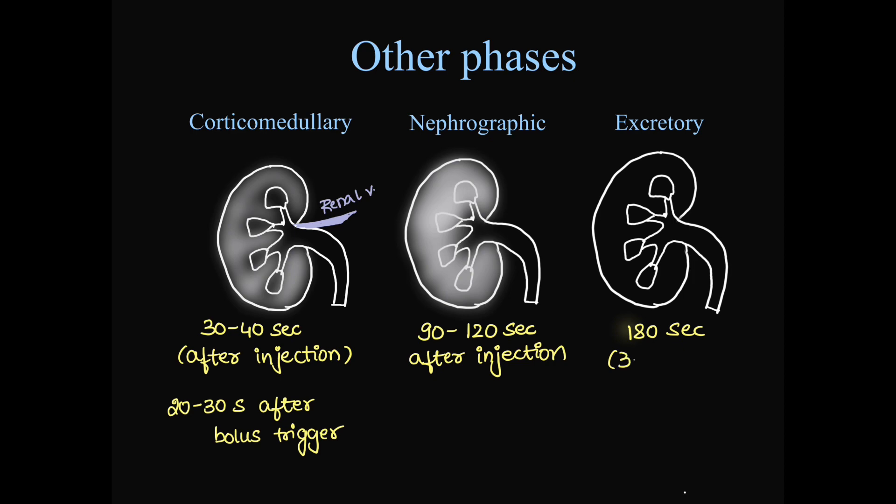Next, we have excretory phase. Taken at 180 seconds or 3 to 5 minutes after injection. In this, the dye has already come to the collecting system, minor calyx and major calyx. And the urinary tract can be very well seen on excretory or delayed phase.